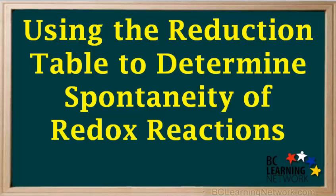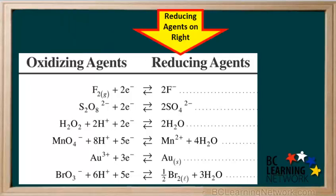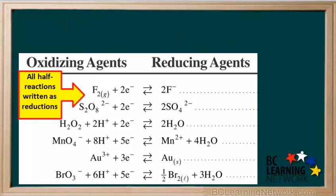Here, we will zoom in on the portion of the table we are talking about at a particular time. It would be good for you to pause the video frequently and find what we are pointing out on the full version of the table. Remember, oxidizing agents are on the left side of the table and reducing agents are on the right. All the half reactions on this table are written as reduction half reactions. Notice the oxidizing agents are all gaining electrons.